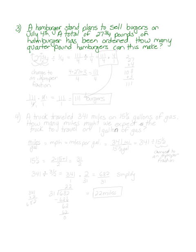The hamburger stand plans to sell burgers on July 4th. A total of 27 and three-quarters pounds of hamburger meat has been ordered. How many quarter pound hamburgers can this make? The math we're going to do is division. We start with our 27 and three-quarters, and we're going to divide this into one-quarter pound patties to make each hamburger.